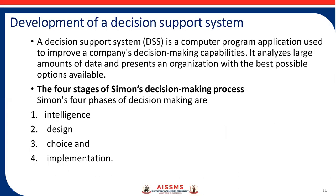The development of a Decision Support System: it is a computer program application used to improve a company's decision-making capabilities, and it analyzes large amounts of data and presents organizations with the best possible options available. The four stages of Simon's decision-making process are: first, Intelligence; second, Decision; third, Choice; and fourth, Implementation.